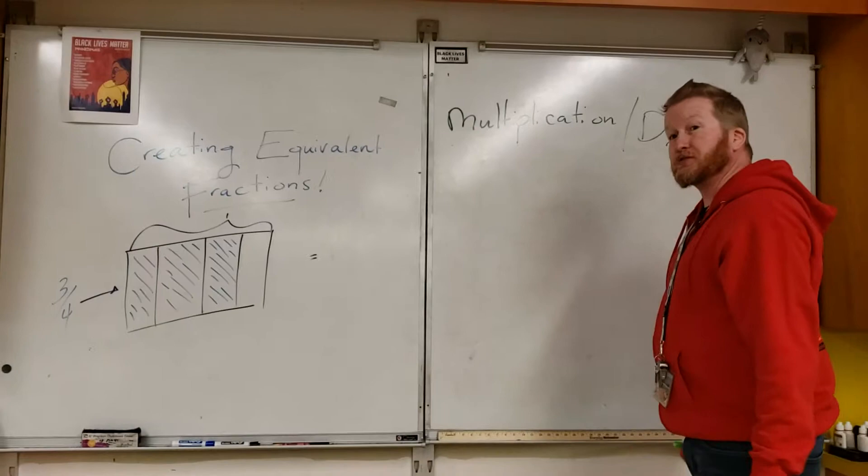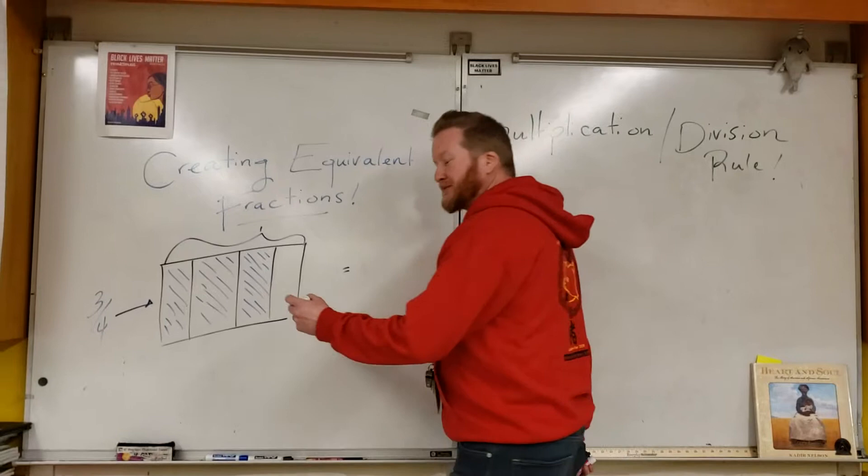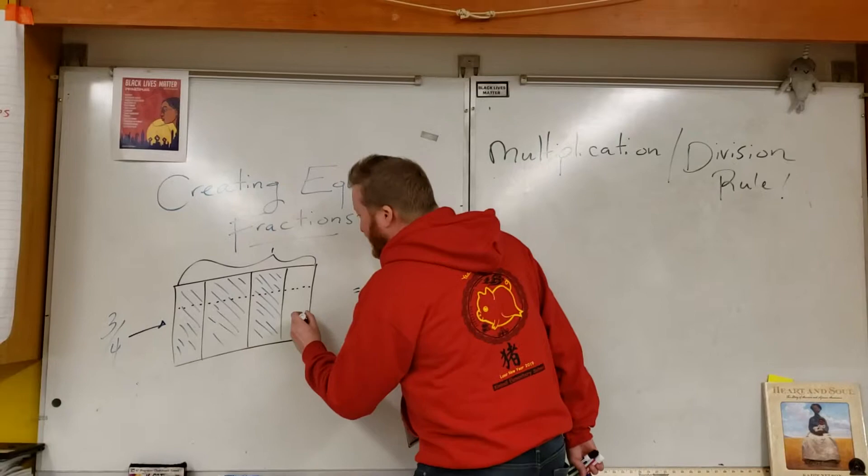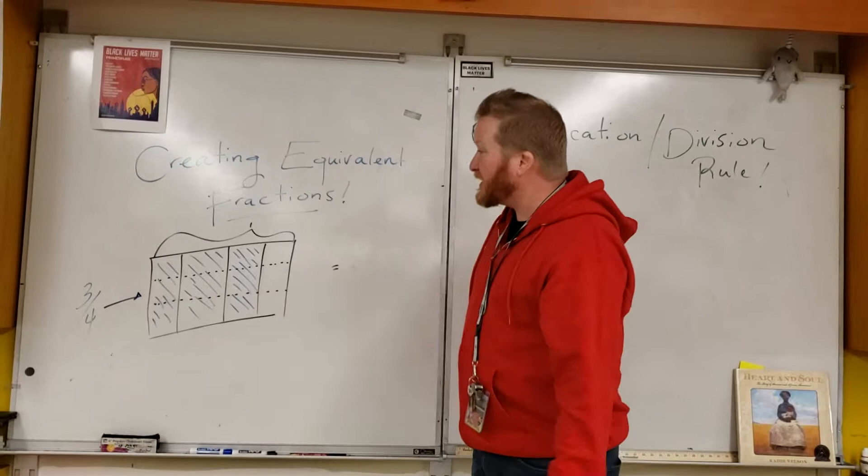That is going to be the multiplication rule. Quincy's jumping ahead. Using a visual model, how can I turn this fraction three-fourths into an equivalent fraction? What am I doing, Quincy? We are dividing it into equal parts. If I have an area model, a bar model, if I just draw two lines across, thus dividing it...